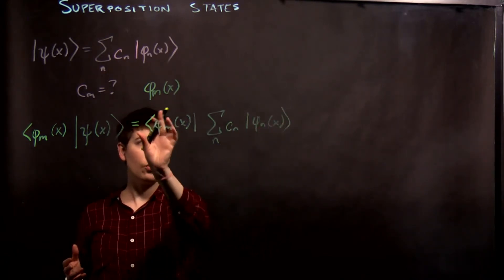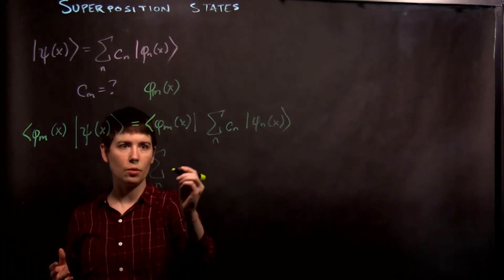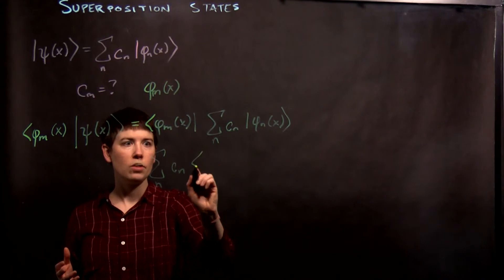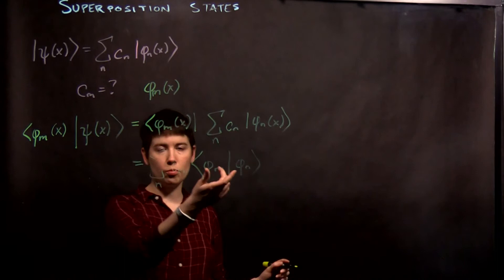Well, so if we move this inside, we now have our sum over n, c n, but then we basically have phi m, phi n inner product,